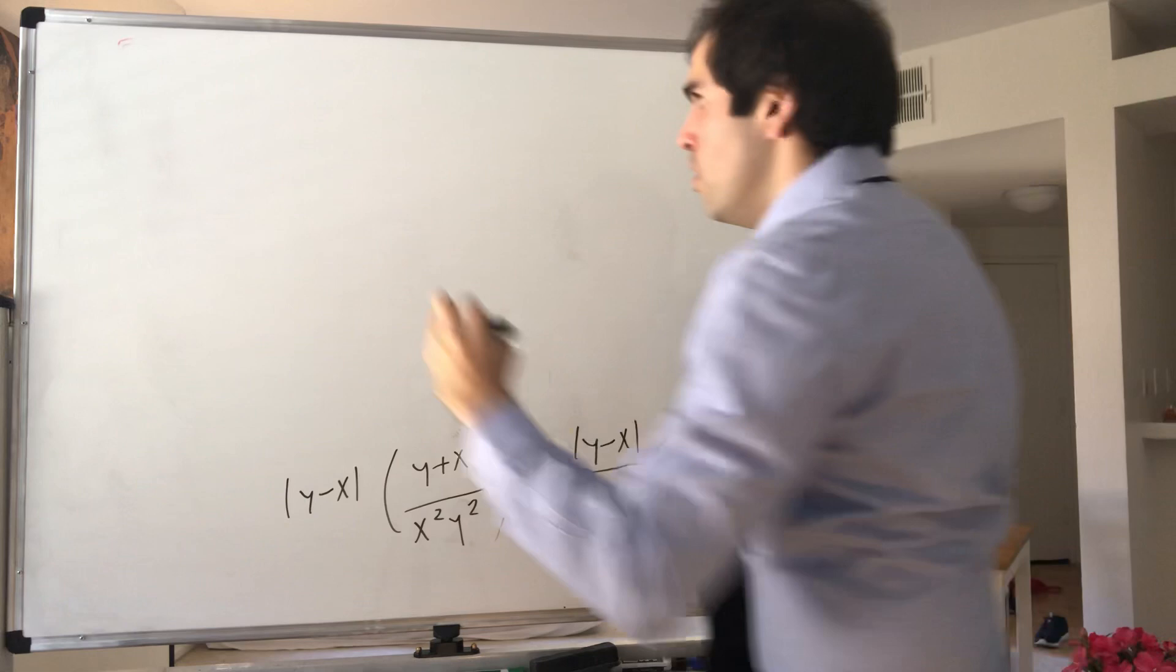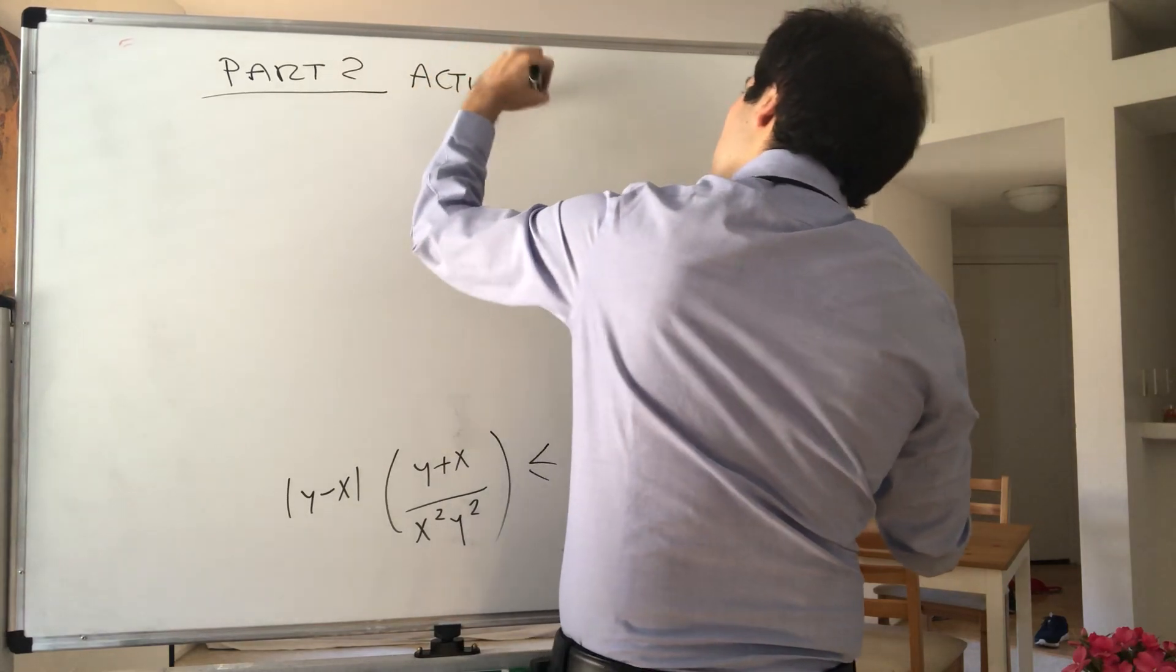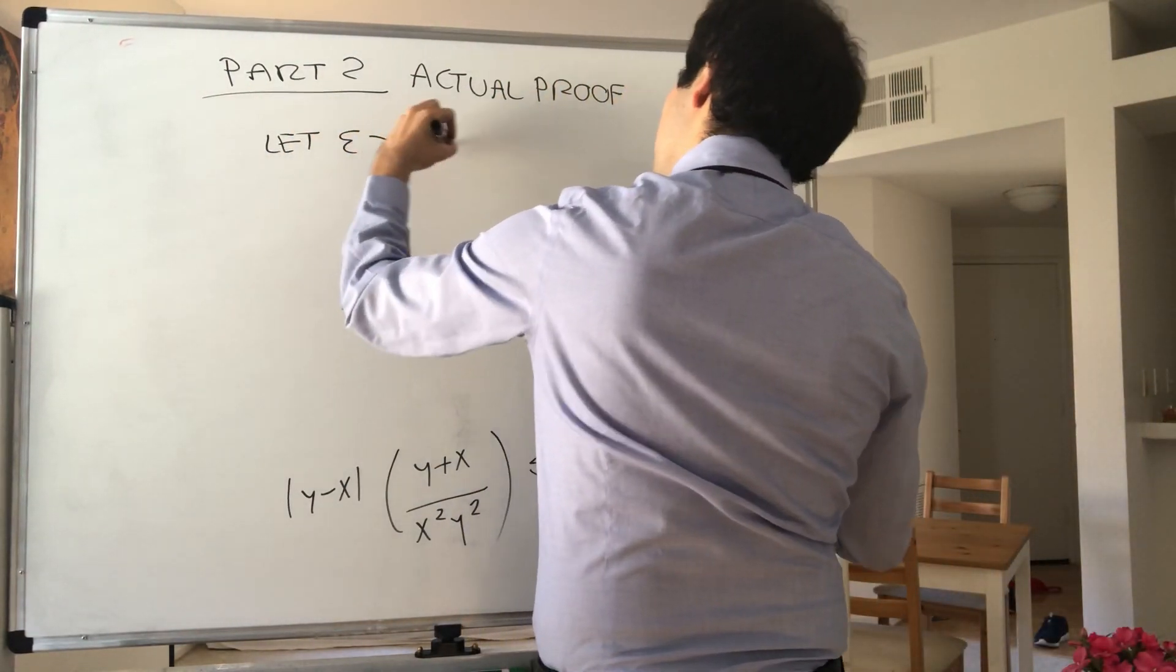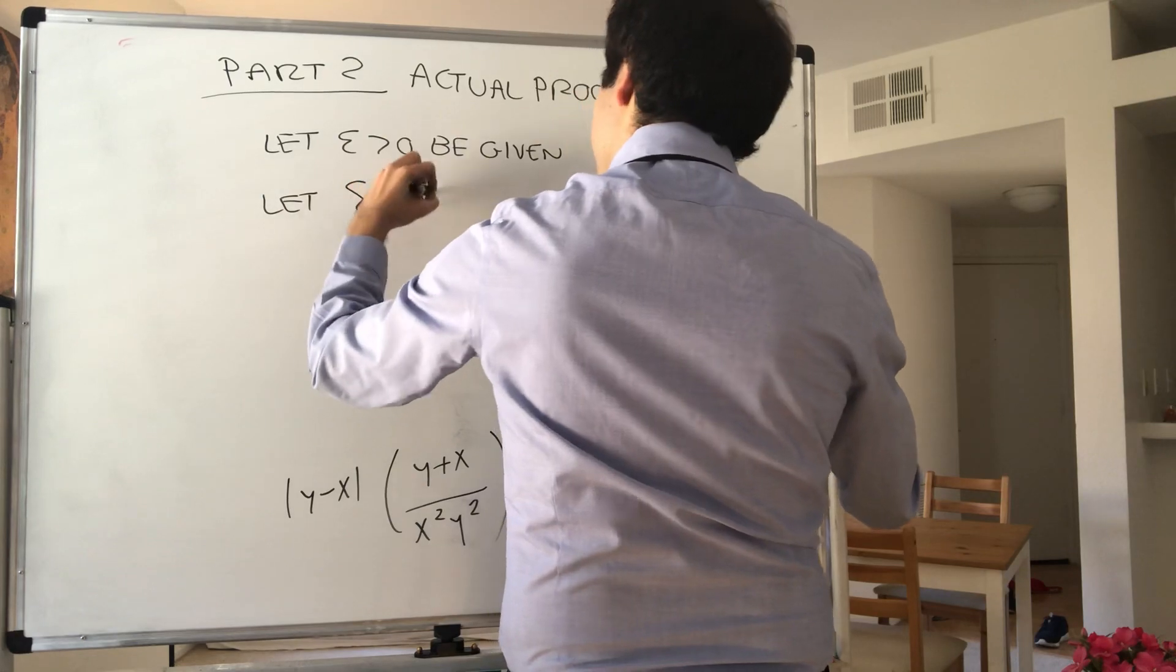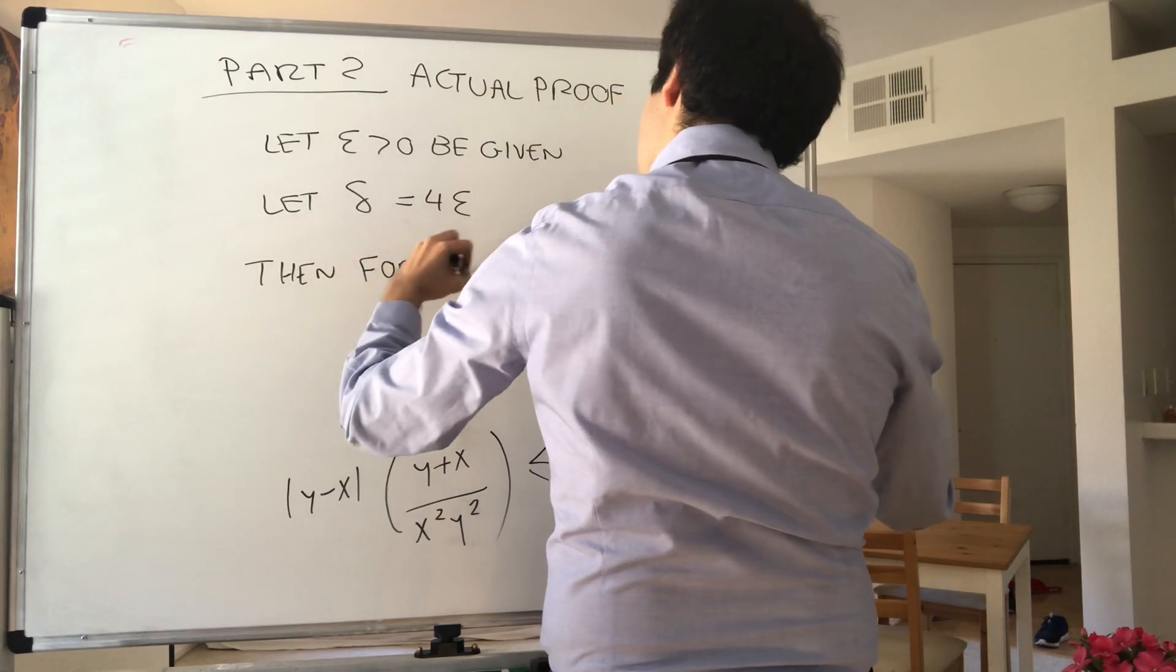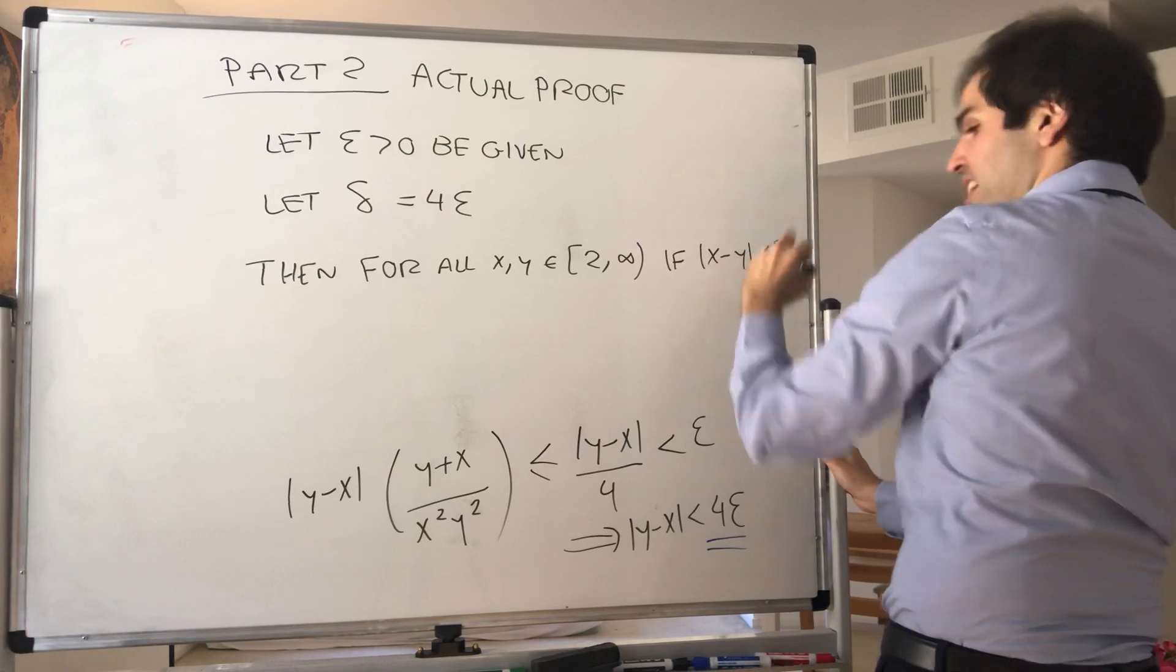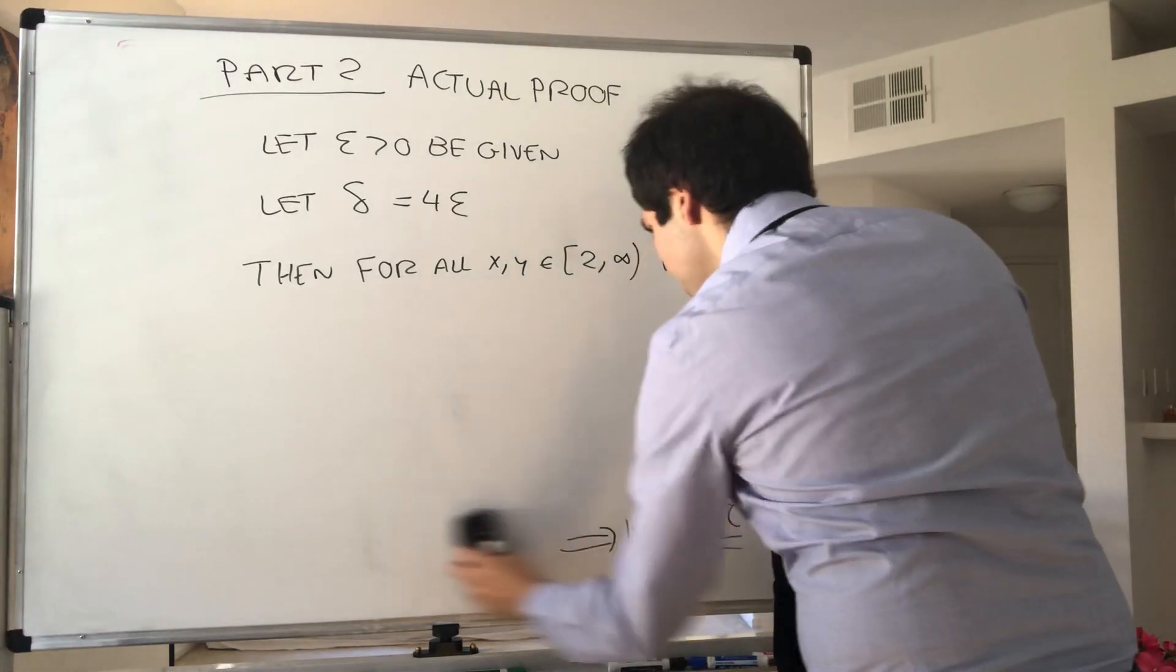Part two. Our actual proof. So, let epsilon be given. And let delta be 4 epsilon. Then, for all x and y in the interval 2 comma infinity, if x minus y is less than delta, then calculate f of x minus f of y. But we pretty much did that.